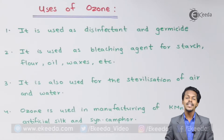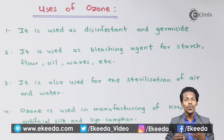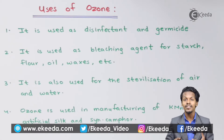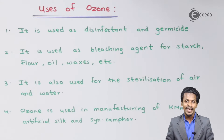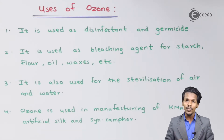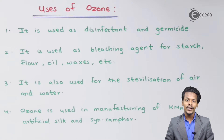So friends, talking about the uses of ozone, we understand that ozone plays a very vital role in protecting the earth from the harmful UV rays that come through the sun. And that is the biggest use that we know. But there are other uses also that I want to talk about.